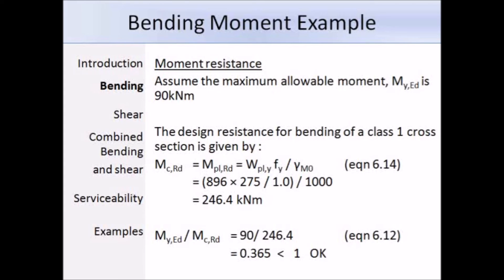If we substitute in those values, we get the section modulus from the section properties, so that's 896 cm³. We already determined that the yield strength is 275 N per mm². We know that gamma M0 is equal to 1.0. It's important to change units to make sure that everything is consistent. Here I've just converted the section modulus from cm³ to mm³. After working out equation 6.14, we get an answer of 246.4×10⁶ Nmm, and that can be just simplified down to 246.4 kNm.